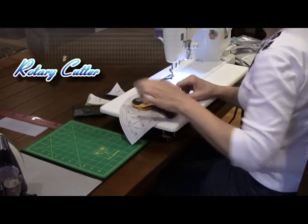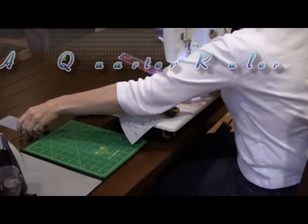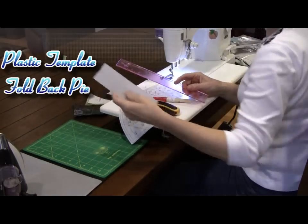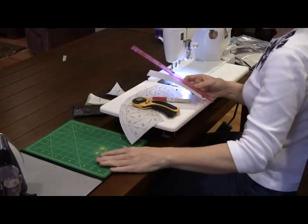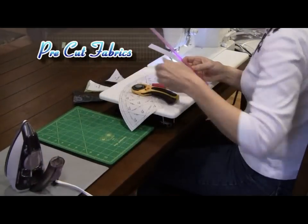We need a rotary cutter, our add-a-quarter ruler, and a template, classic template foldback piece. I have a cutting mat, ironing board, and my iron, and my pieces have all been pre-cut.